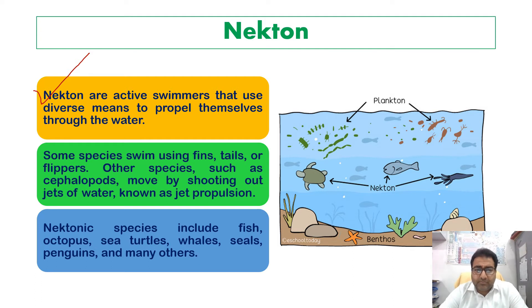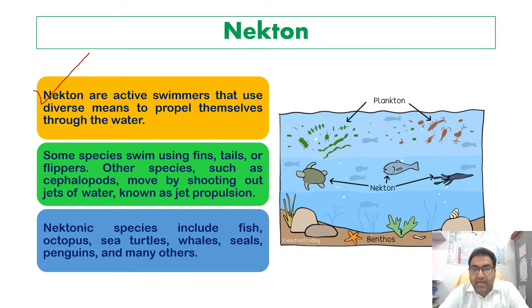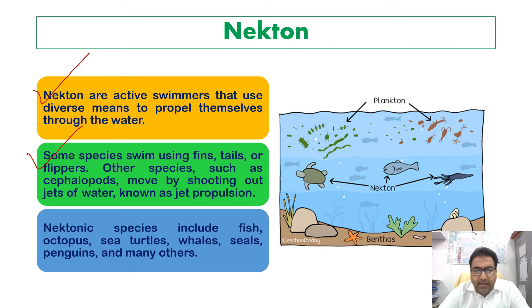Other species, such as cephalopods, move by shooting out jets of water — a process called jet propulsion. Nektonic species include fish, octopus, sea turtles, whales, seals, penguins, and many other organisms that live in or are in contact with water and have the power of locomotion.